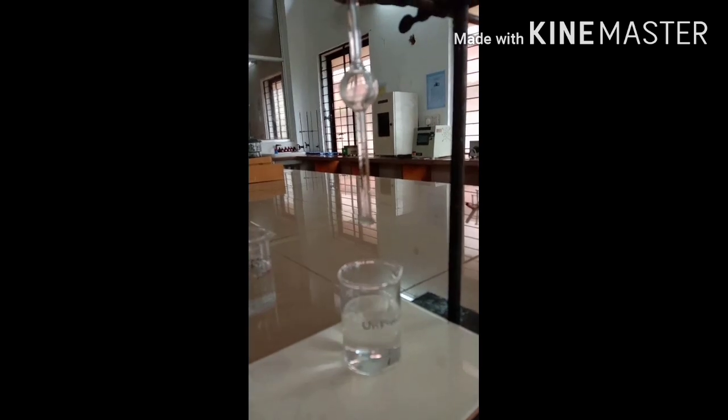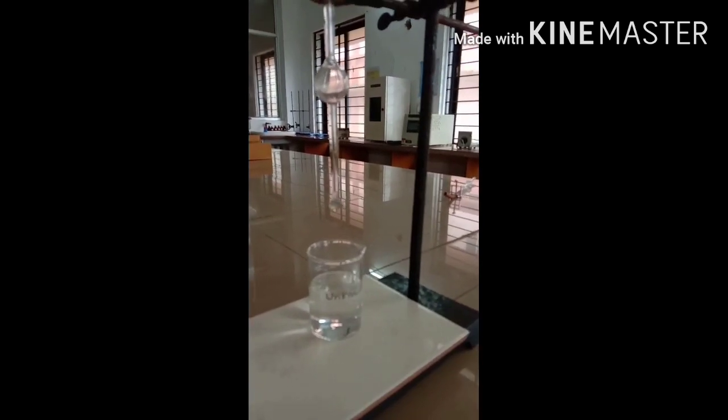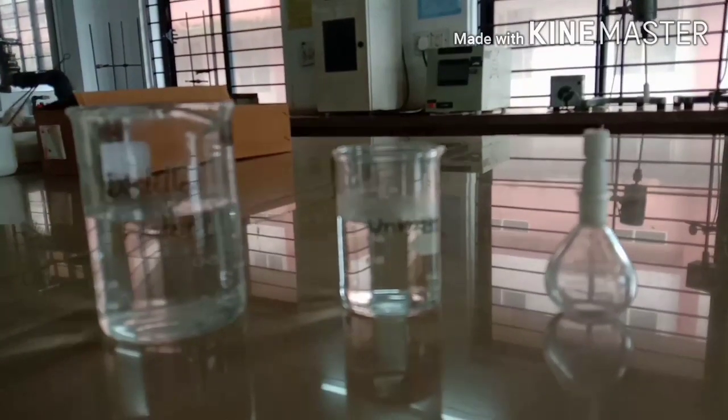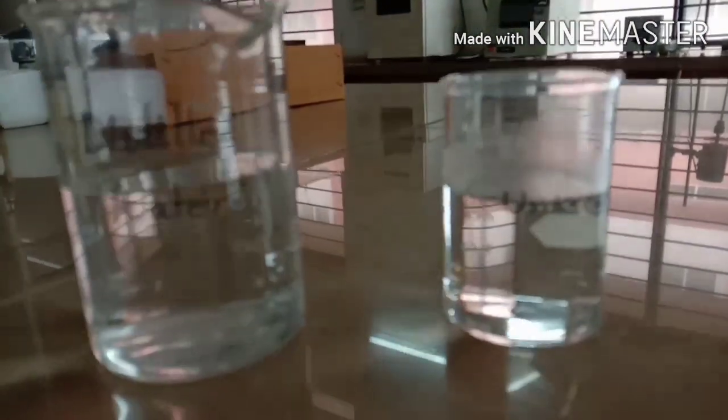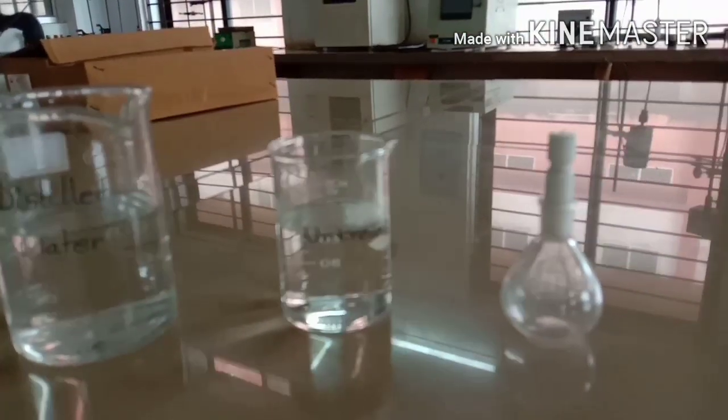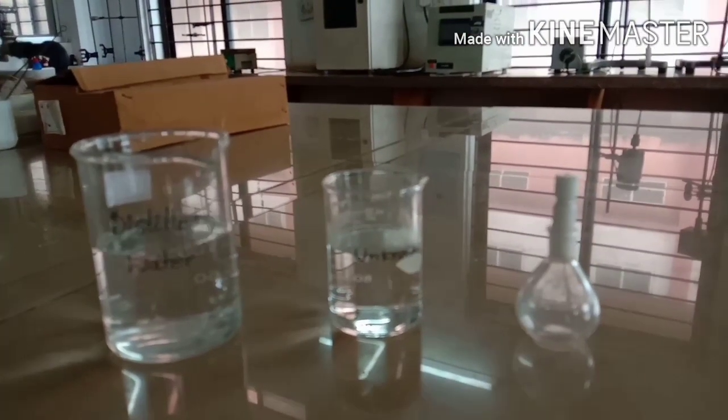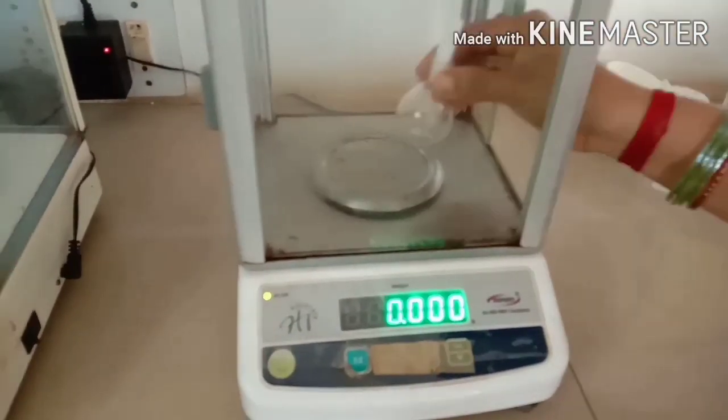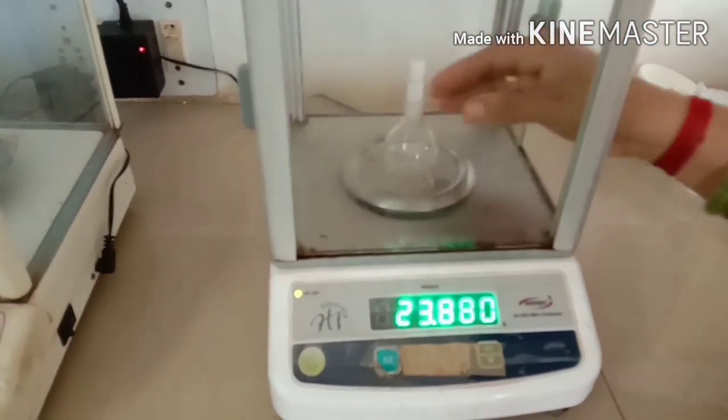Next is determination of density of unknown liquid by using specific gravity bottle. First, weigh the empty specific gravity bottle.